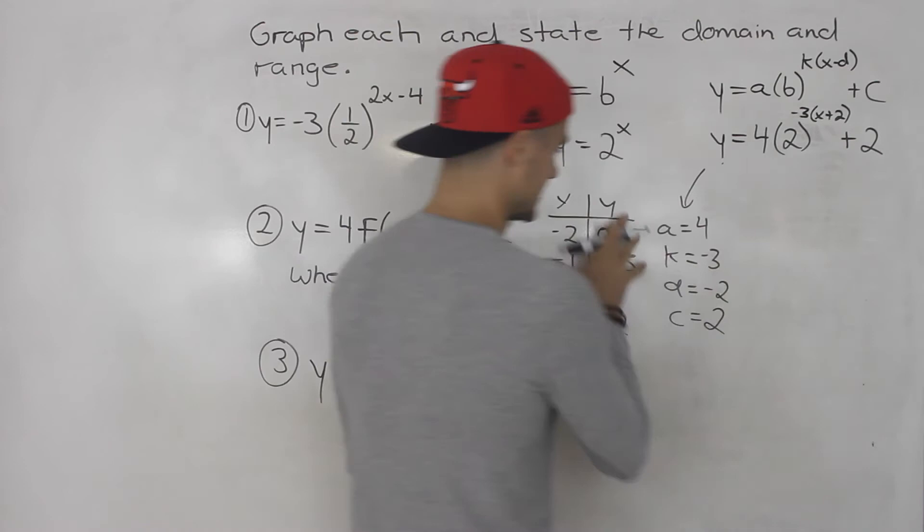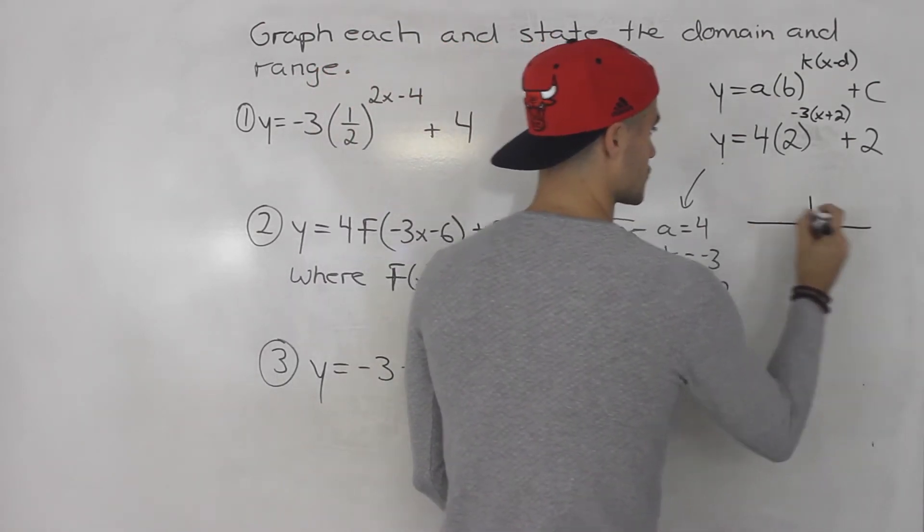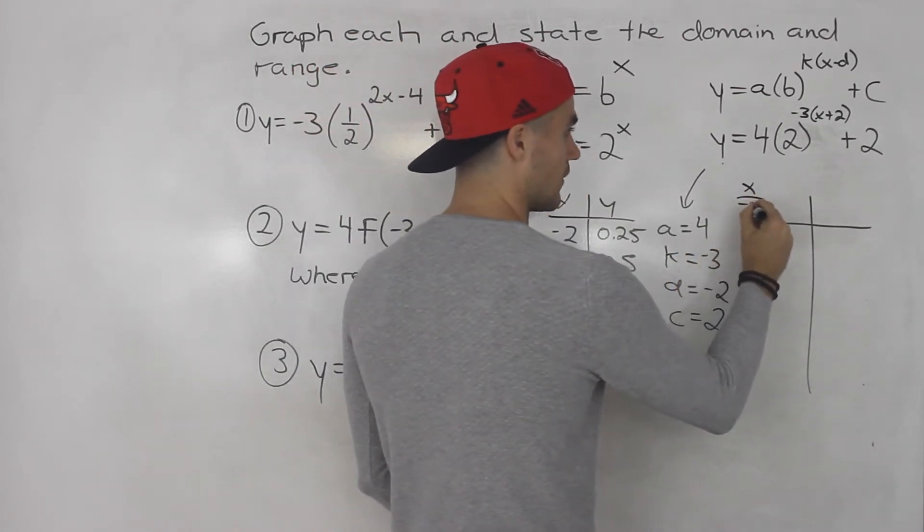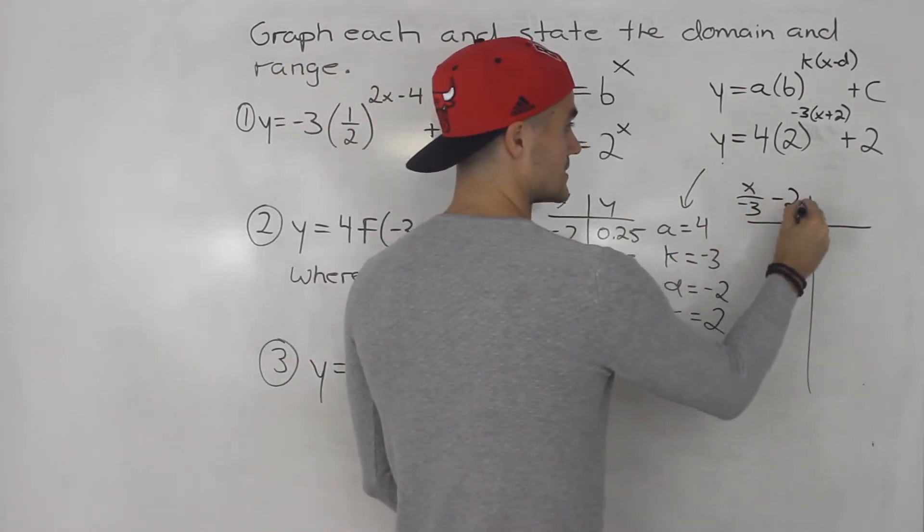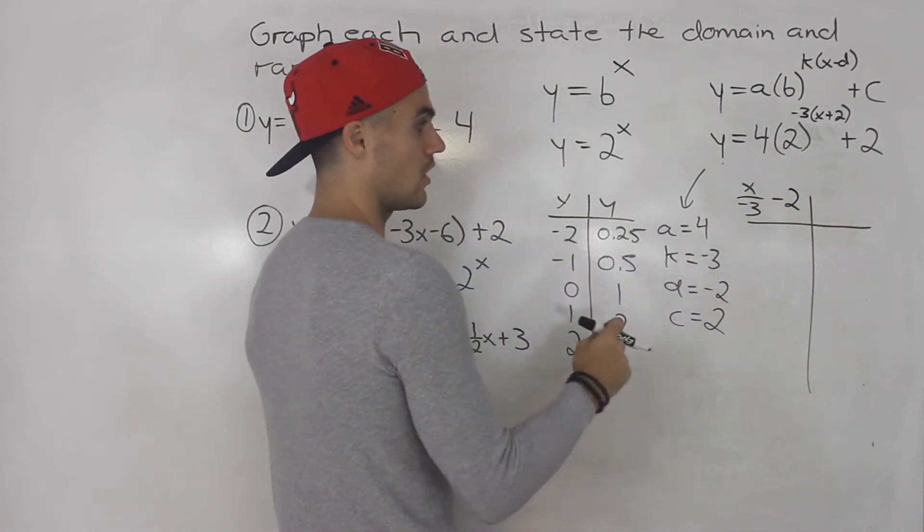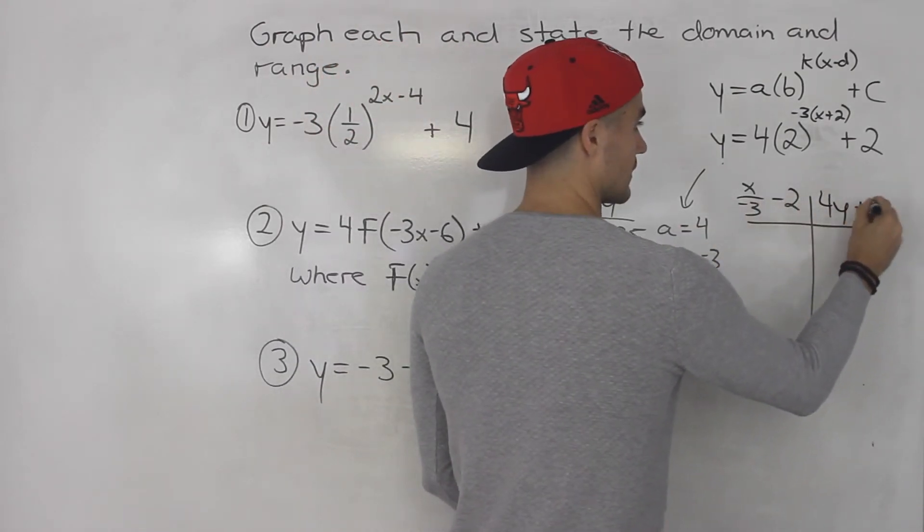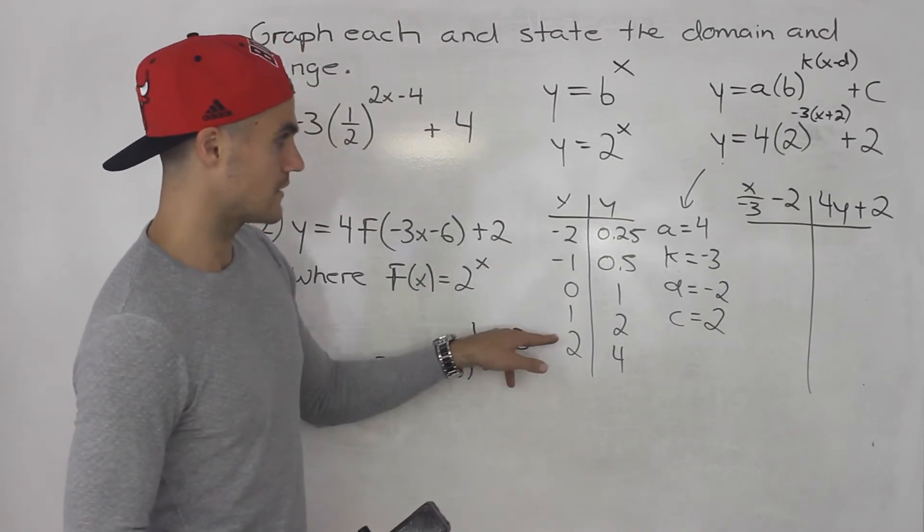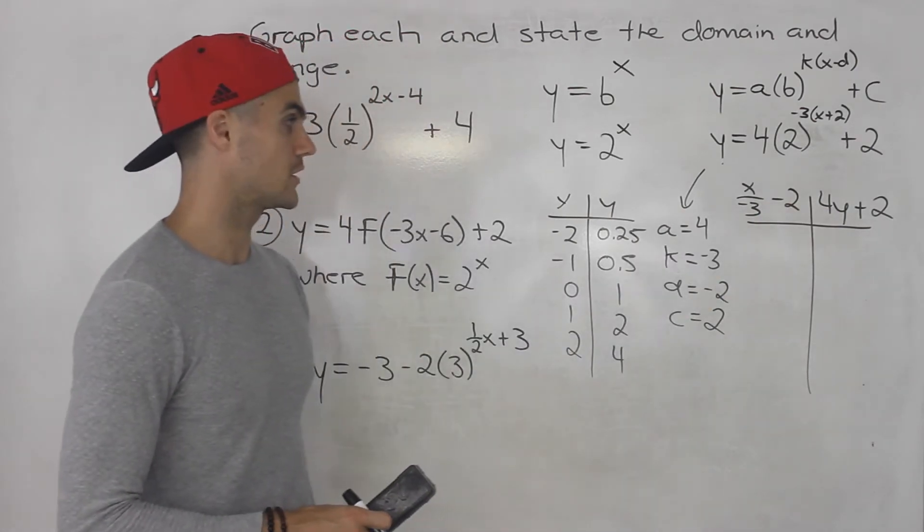So now you want to take this table and you want to put it through those transformations. So basically x over k plus d, so x over negative 3 - you're going to take all the x values divided by negative 3 and then subtract that d value of negative 2. All of the y values are going to multiply by 4 and then we're going to add the c value of 2. So all the x values here we put through this formula, all of the y values we put through that formula.